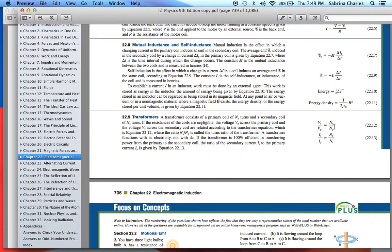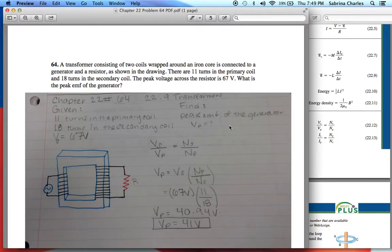If the transformer is 100% efficient in transferring power from the primary to the secondary coil, the ratio of the secondary current IS to the primary current IP is IS over IP equals NP over NS. But for this problem we're just going to use the formula VS over VP equals NS over NP. We are looking for VP.